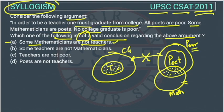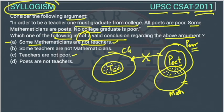Let's check the third option: teachers are not poor. They are separate circles, so this is also correct. Fourth option: poets are not teachers. Poet is inside the poor circle and teacher is here, so poets are not teachers — this is also correct.